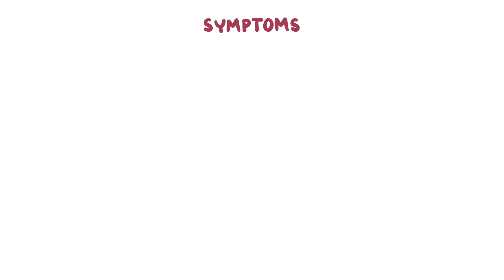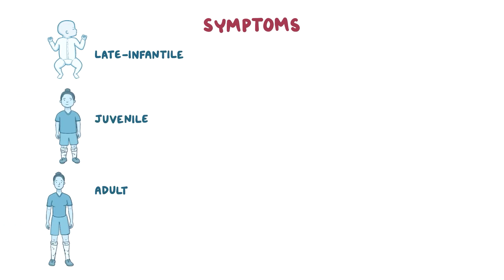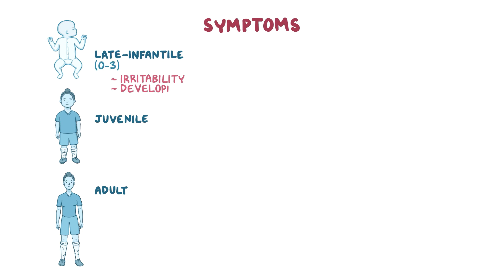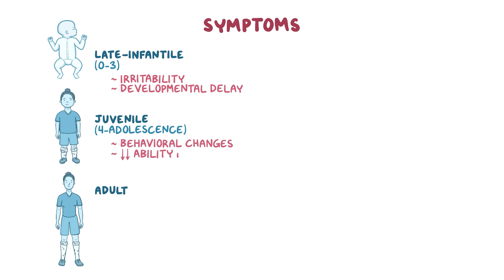There are three forms of MLD based on the age at onset of symptoms: late infantile form, juvenile form, and adult form. In the late infantile form, symptoms develop within the first three years of life and include irritability and developmental delay. In the juvenile form, symptoms usually develop between the age of four years and adolescence, around 12 to 14 years, and include behavioral changes and decreased ability in school. In the adult form, symptoms usually develop after the age of 16 and include memory loss and psychosis.